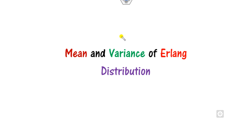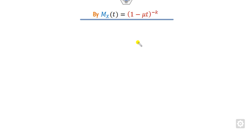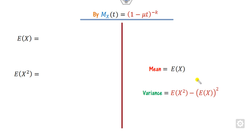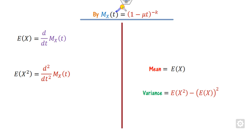Based on this moment generating function we can define the mean and variance. The relation between E(x) and the MGF is that E(x) is the first derivative of the MGF evaluated at t=0, and E(x²) is obtained from the second derivative.